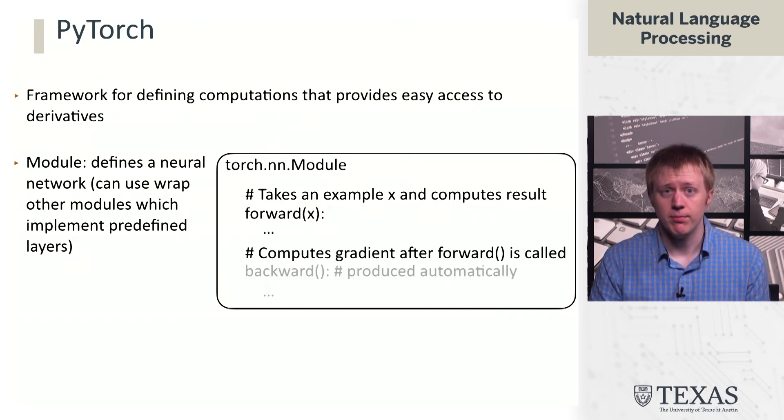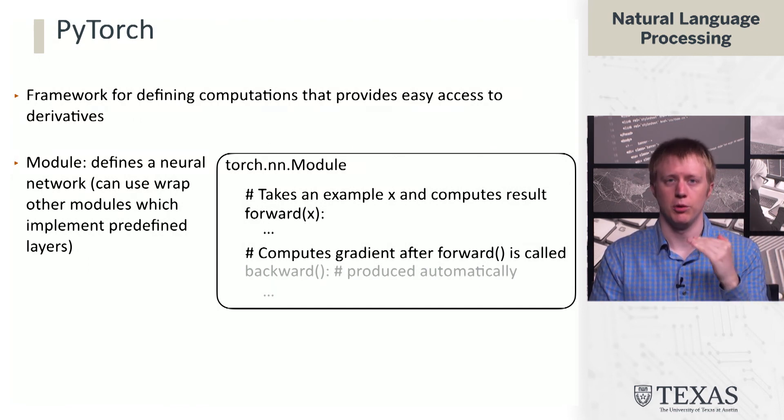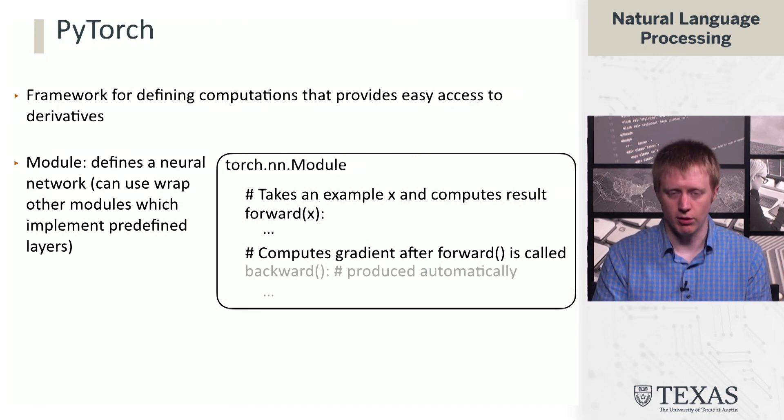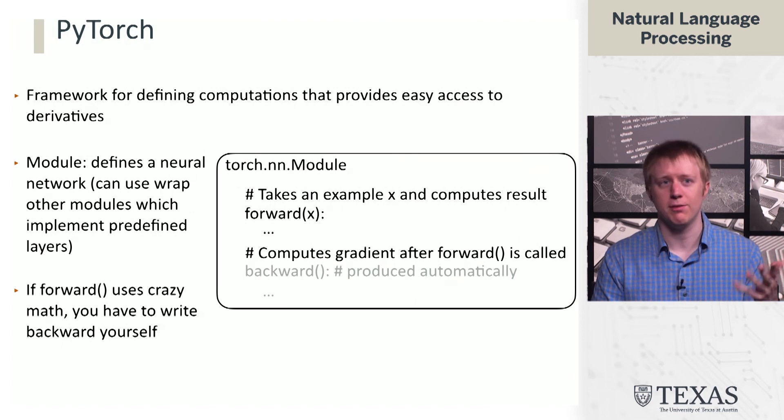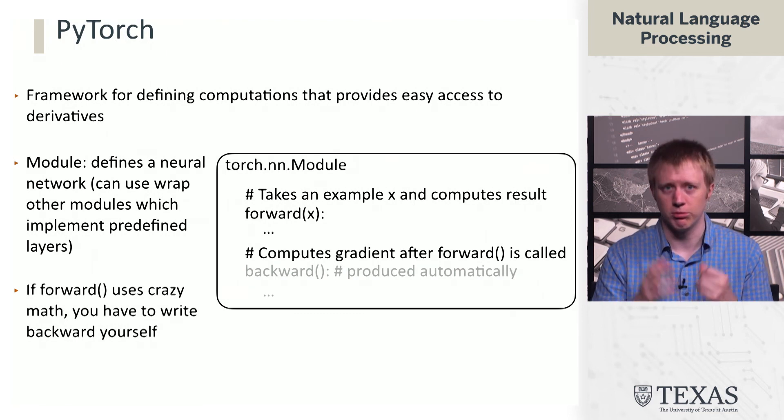And then we have backward. Typically, you do not need to write this by hand. The cool thing about PyTorch is that based on what you write in forward, backward will be automatically instantiated and will do the correct thing to compute gradients. The caveat is that if you do some really crazy math in forward, you might have to define backward yourself if there's some extra part of the gradient that you need to compute analytically and code that in. But otherwise, if you're using relatively basic mathematical operations or standard neural net tools, you'll never need to touch backward.